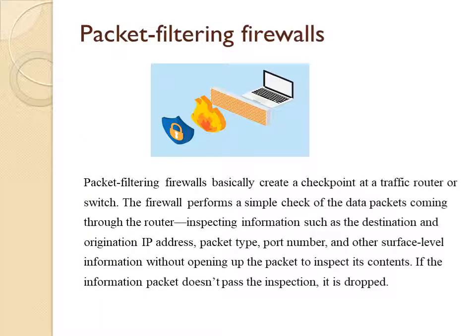The packet filtering firewall is the most basic and oldest type of firewall architecture. It creates a checkpoint at a traffic router or switch. The firewall performs a simple check of the data packets coming through the router, inspecting information such as the destination and origination IP address, packet type, port number, and other surface-level information, without opening up the packet to inspect its content. If the packet information does not pass the inspection, it is dropped.